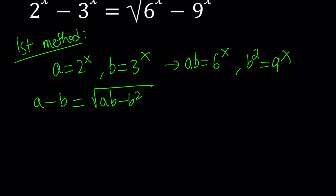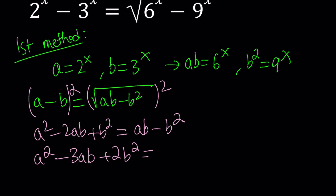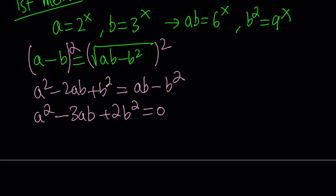Squaring both sides gives us a squared minus 2ab plus b squared on the left, and the square root disappears on the right, giving ab minus b squared. Notice we have like terms: negative 2ab and ab. Putting everything on the left-hand side, we get a squared minus 3ab, and then negative b squared plus b squared becomes 2b squared, so: a squared minus 3ab plus 2b squared equals 0.